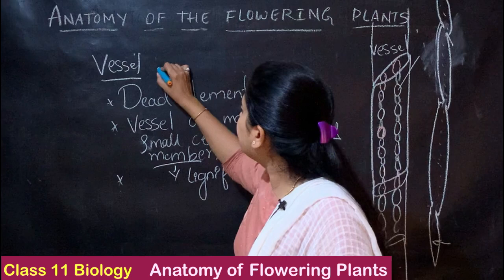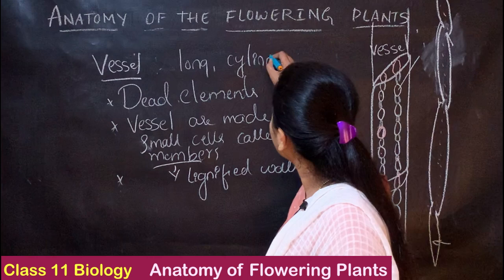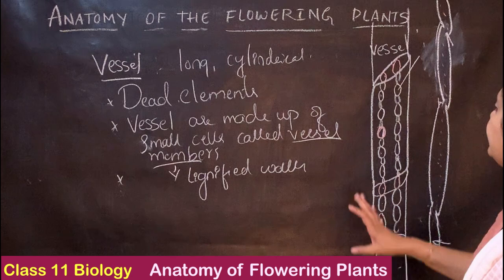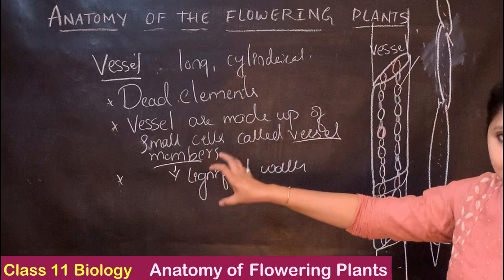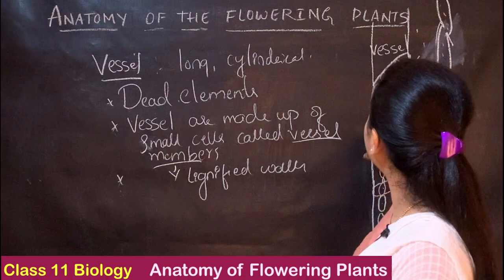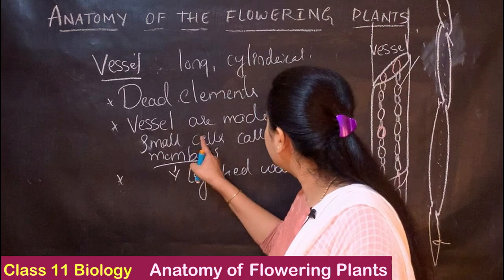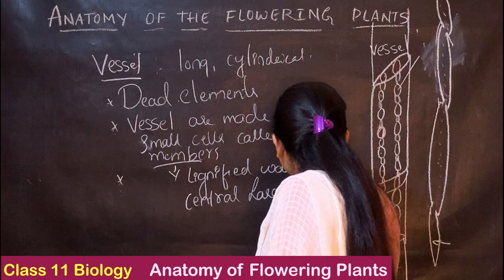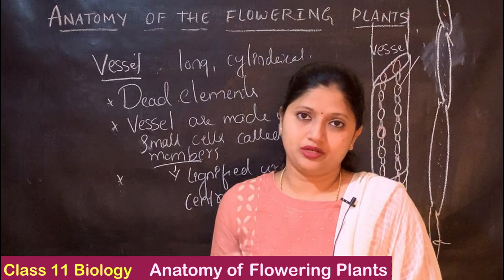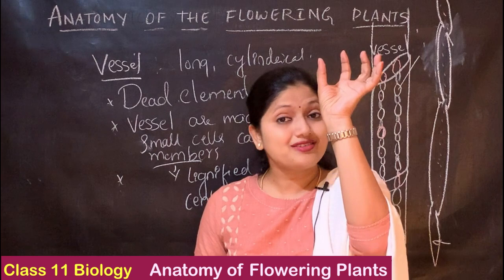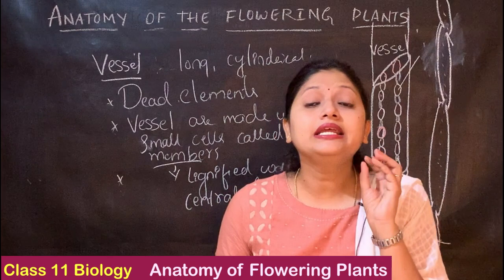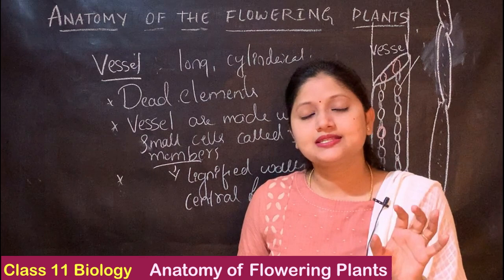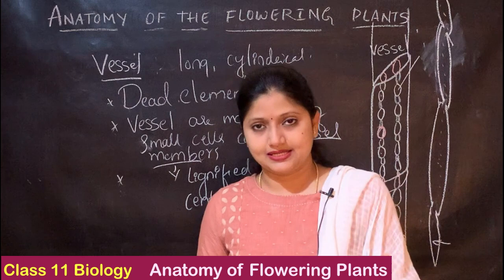Vessels are long cylindrical structures. They are dead and made up of vessel members. Every vessel member has got lignified walls around it and a central large lumen. Due to the presence of lignin, we call them dead elements of the xylem.